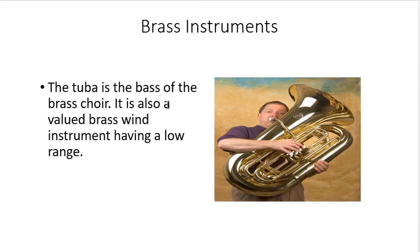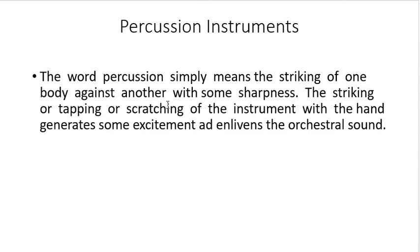We also have the tuba. The tuba is the bass of the brass choir — a large brass wind instrument having a low range. Remember that the bigger the instrument, the lower the pitch; and the smaller the instrument, the higher its range in pitch.